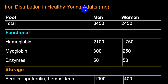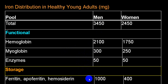In an average healthy individual, about 3500 mg of iron is stored; in women, approximately 2500 mg. Of this, hemoglobin contains nearly 2100 mg, myoglobin about 300 mg, enzymes only 50 mg, and storage iron is almost 1000 mg. Our daily requirement is around 1 mg. Storage is in three main compounds: ferritin, hemosiderin, and apoferritin. Ferritin is the main short-term storage; hemosiderin is the long-term storage.